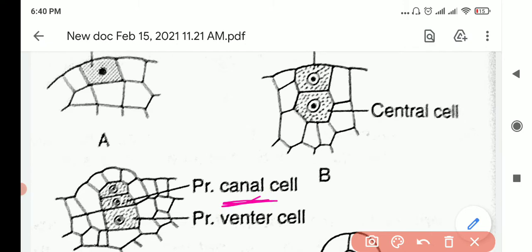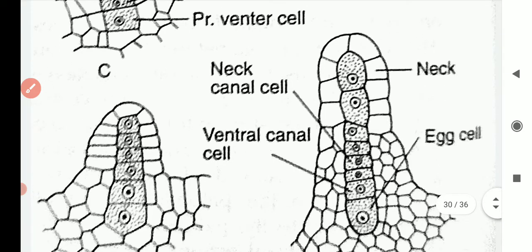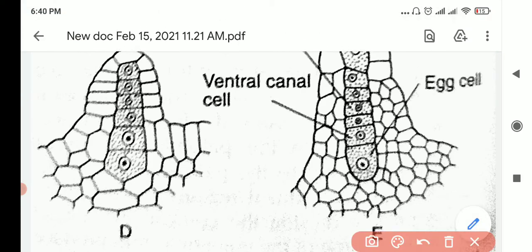This primary canal cell will divide into 4 to 6 or 4 to 8 long neck cells. Here you see these neck cells. It's like a neck, like a vase. These neck cells have formed from the primary canal cell.